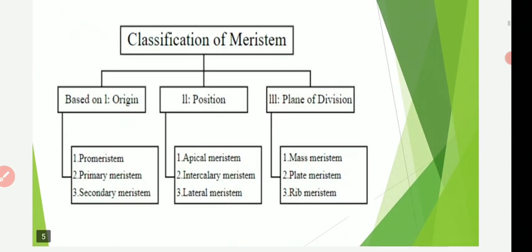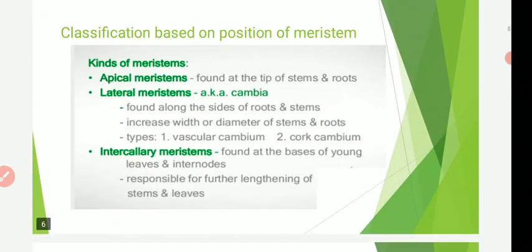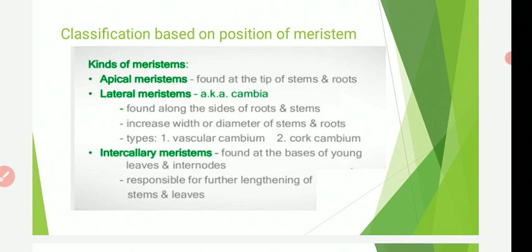Meristem is classified into three types based on origin, based on position, and based on plane of cell division. Based on origin they are divided into pro-meristem, primary meristem, and secondary meristem. Based on position they are divided into apical meristem, intercalary meristem, and lateral meristem. The apical meristem is present at the apex of the stem, root, and appendages — they are known as growing points.